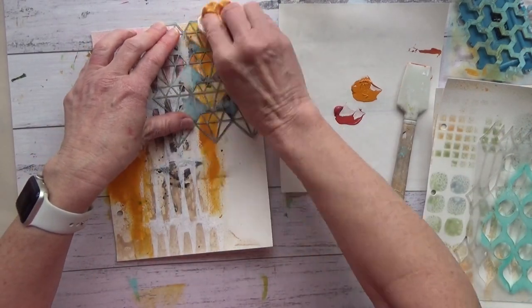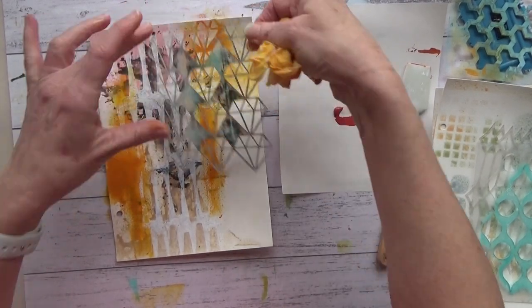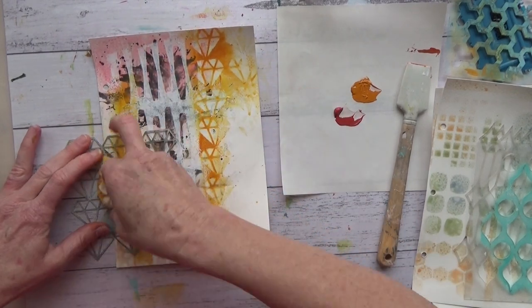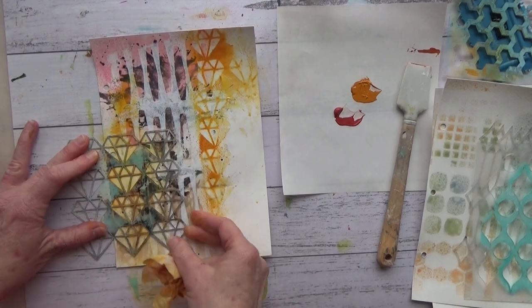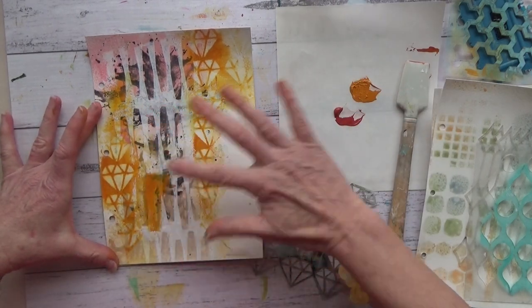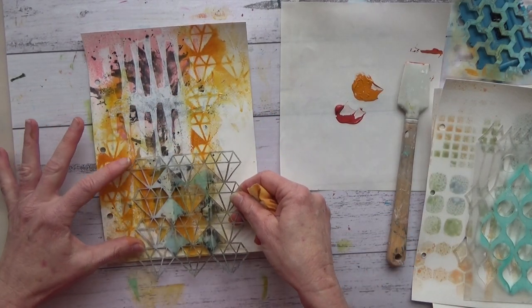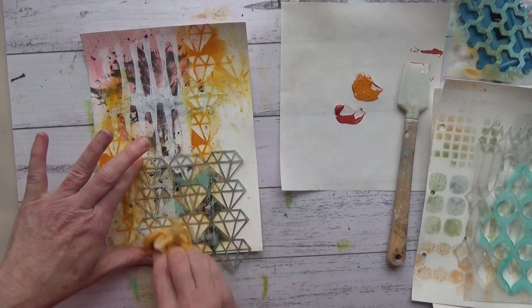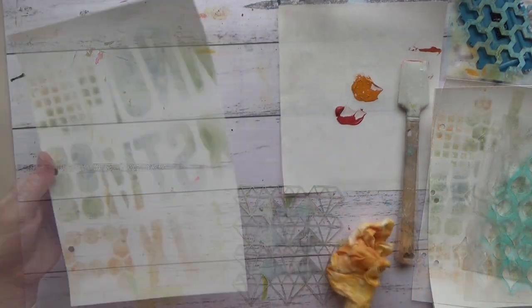With baby wipe, keep turning your baby wipes so that you don't add more color onto it as you wipe off. And it takes that paint away and gives you a negative image of the actual stencil. I find this as a second layer or third layer works really well to combine all your layers together and make it a cohesive composition. And I do this a lot, but remember: try and leave some white space to create some balance.